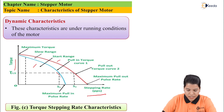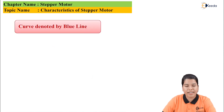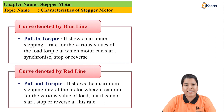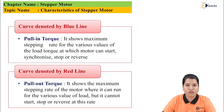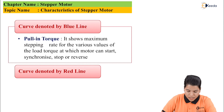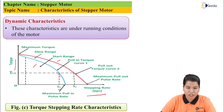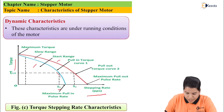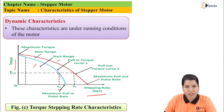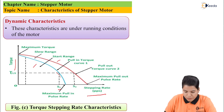The curve denoted by the red line is the pull-out torque. It shows the maximum stepping rate for various values of load at which the motor can run but cannot stop, synchronize, or reverse. There are two pulse rates S1 and S2. The motor can operate perfectly up to S1, but its value can be increased from S1 to S2. However, if the motor operates beyond S2, it will lose its synchronism.